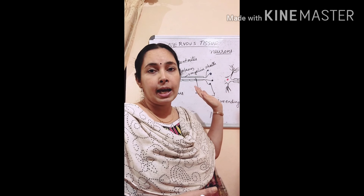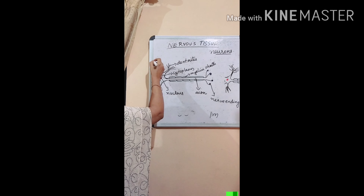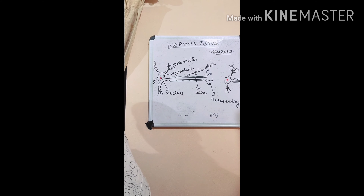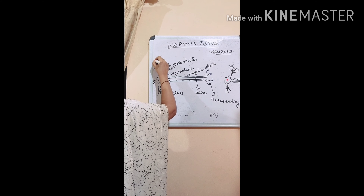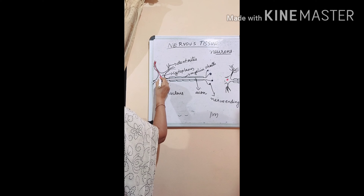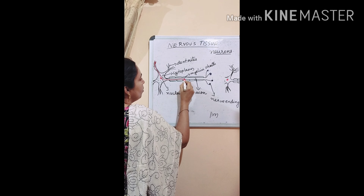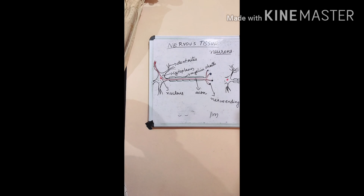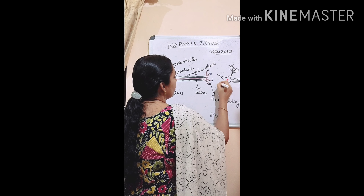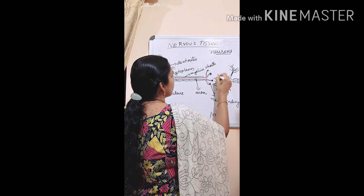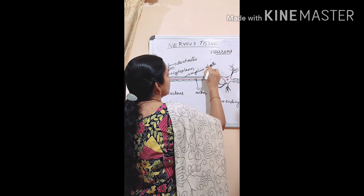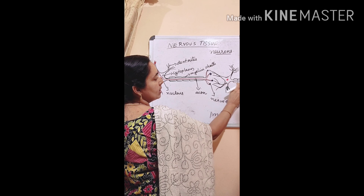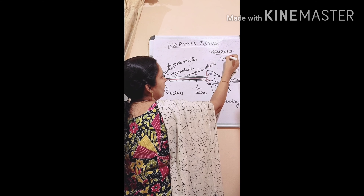From any sense organ — eyes, skin, or any sense organ — the message or impulse or signal enters into the dendrite. From the dendrite, the signal is carried to the cell body, and from the cell body the signal moves through the axon and reaches the nerve ending. The next neuron will be close to it, with branches of the next neuron nearby. There is a small gap between this nerve ending and the tip of the dendrite of the next neuron, and that small gap is called a synapse.